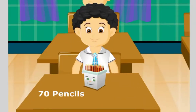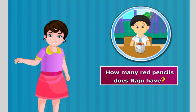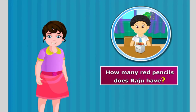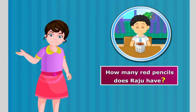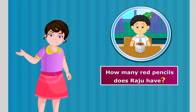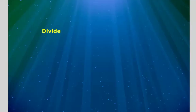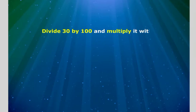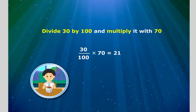Raju has 70 pencils in his box, of which 30 percent are red. Can you tell how many red pencils does Raju have? Using our learning from the previous lesson, we can get the answer by finding percentage of the number. Thus, we divide 30 by 100 and multiply it with 70 to get 30 by 100 into 70 is equal to 21. Hence, Raju has 21 red pencils.